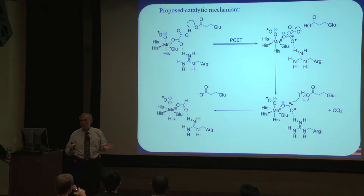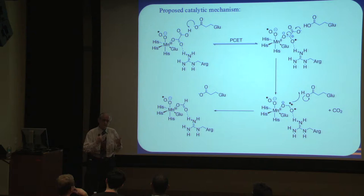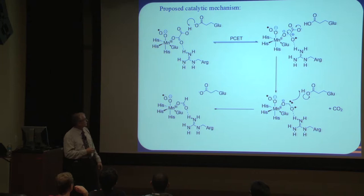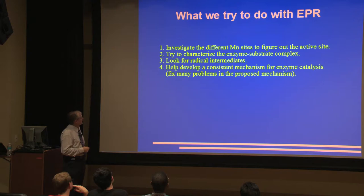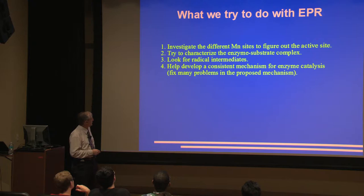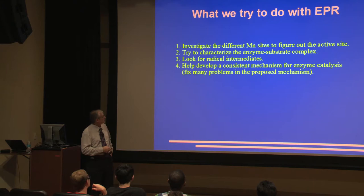I'm now going to show you spectra that I've taken with my EPR spectrometer, both in Gainesville at lower fields and in Tallahassee at very high fields. Those spectra will tell the story of what those manganese are about, what they're doing, and what those free radicals are doing. So we try to investigate the different manganese sites to figure out the active site, characterize the enzyme substrate complex, look for radical intermediates, and hopefully develop a consistent mechanism for the catalysis.